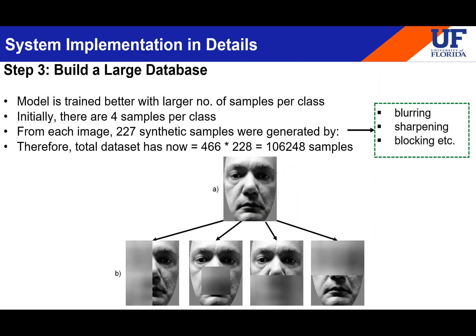The next step is building a large database. Any CNN model trains better with a larger number of samples per class — very few samples means it may not learn the important features. Initially there were only four samples per class, so I generated 227 new synthetic samples per raw image through code. In total, that gives 228 images per person — one raw image plus 227 synthetic ones.